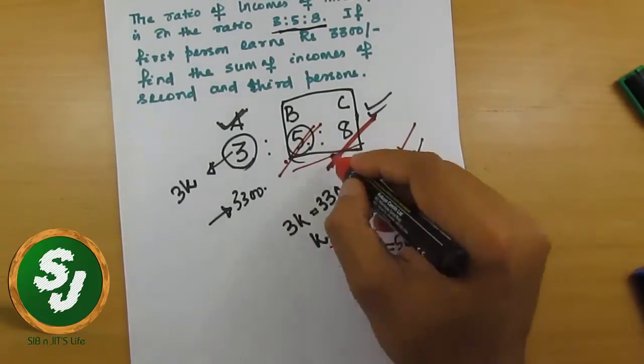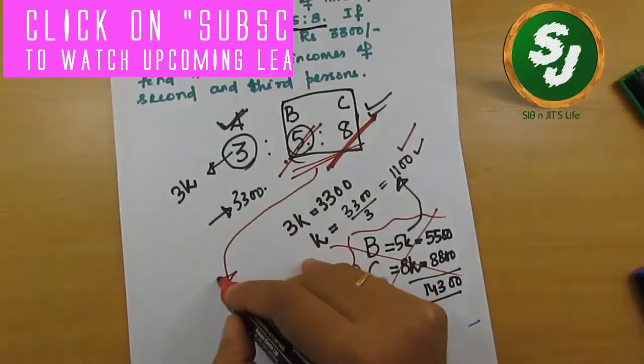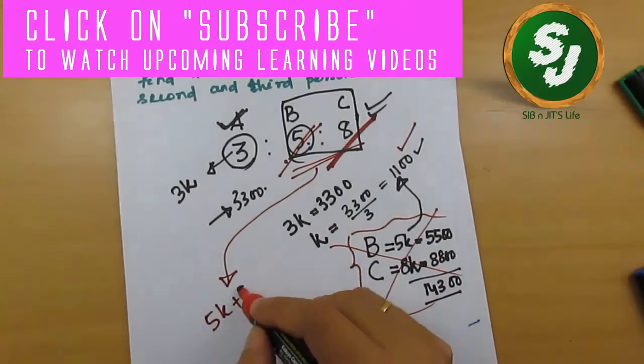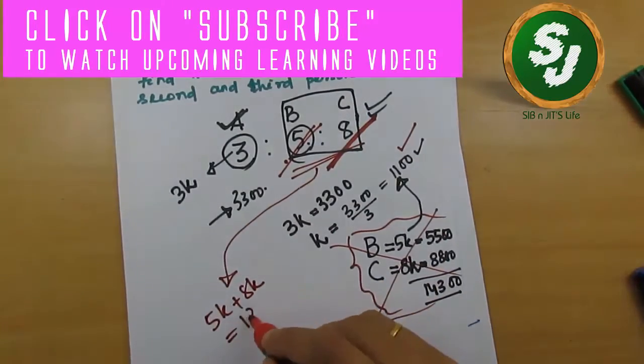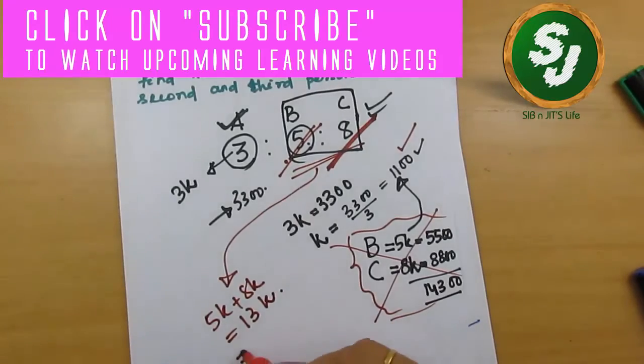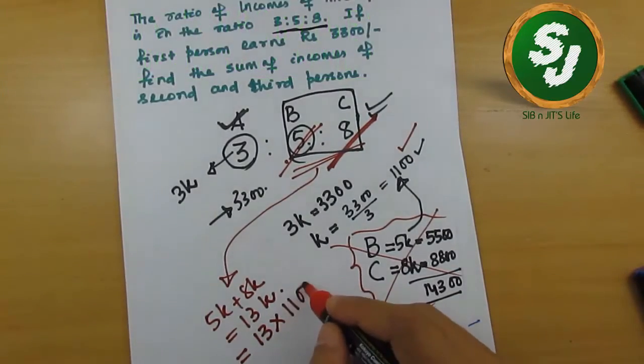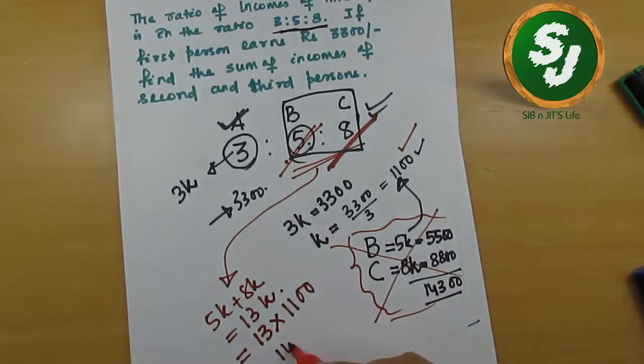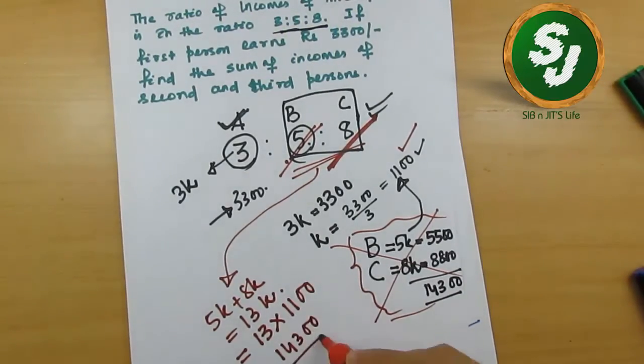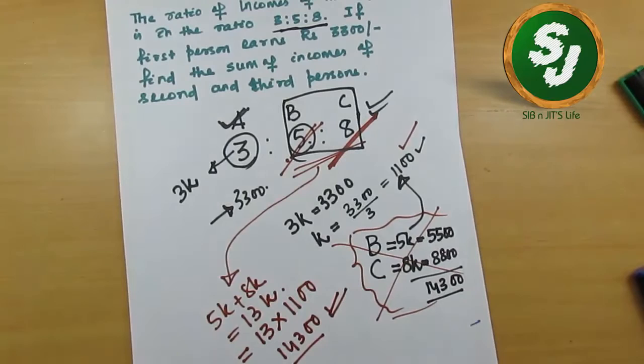The sum of incomes of B and C is 5K plus 8K, which is 13K. Here I'm going to multiply 13 into the value of K which is 1100, and it comes out to be 14300. So this is a straightforward way of solving the question. Now in the next video I'm going to solve another question.